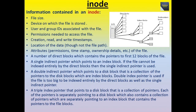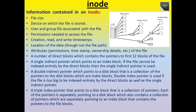Information contained in an inode includes: file size, device on which the file is stored, user and group IDs associated with the file, permissions needed to access the file, creation, read and write timestamps, location of the data, attributes like permissions, timestamp, and ownership details.